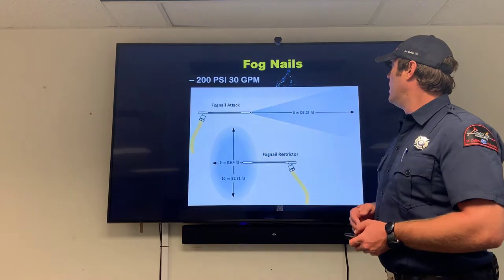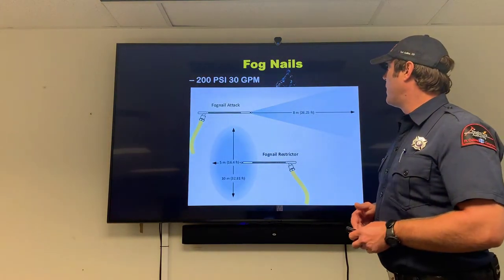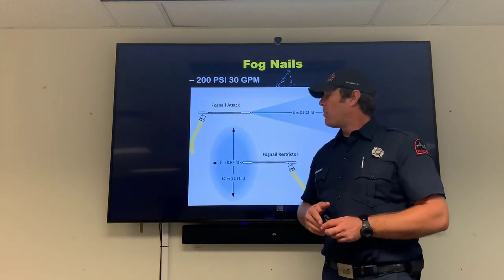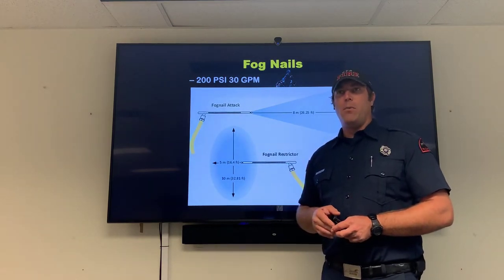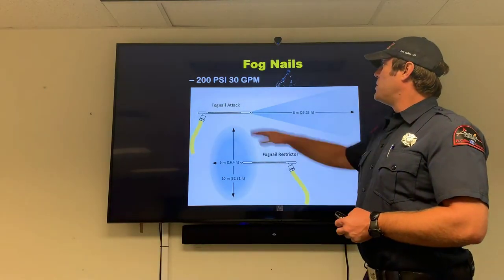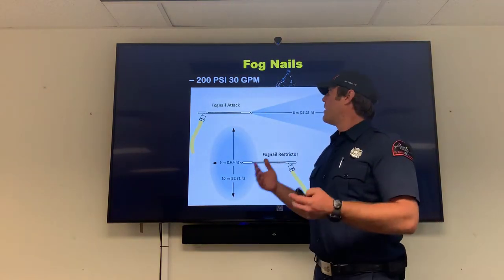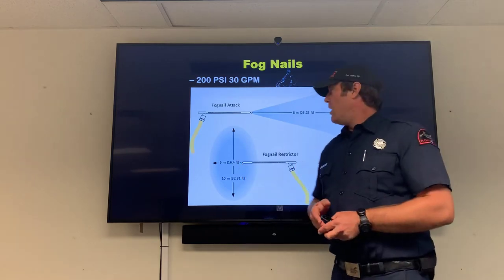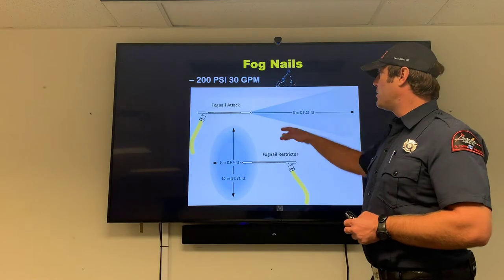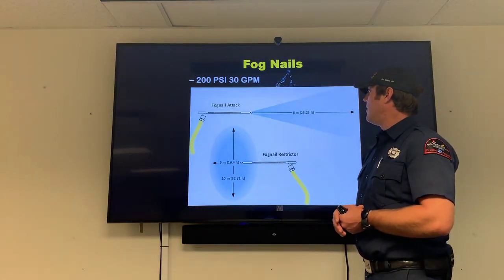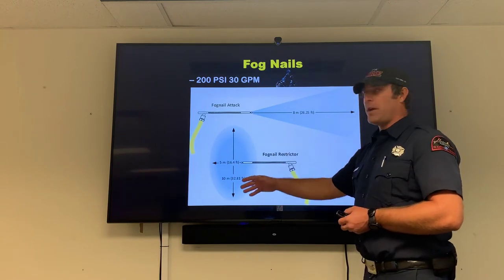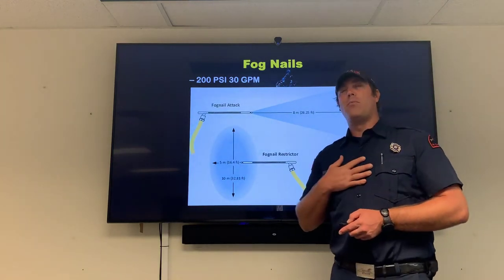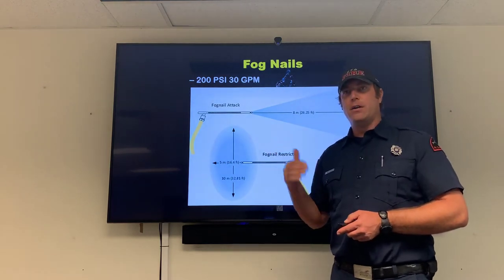Switching to what we do have: our fog nails operate at 200 PSI at 30 GPM regardless of configuration. Remember these are low GPM — only 30 GPM — and we're only flowing them for about 10 seconds, so we're not getting a large volume of water. We have two patterns: the fog nail attack pattern, much like a traditional fog nozzle, and the restrictor pattern, which is much more like a sprinkler. As the DO, we'll probably be the ones putting these nozzles on at a fire.